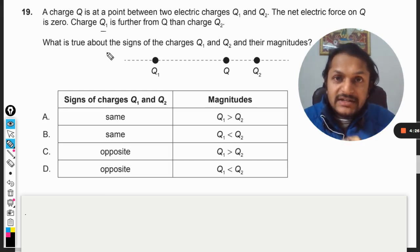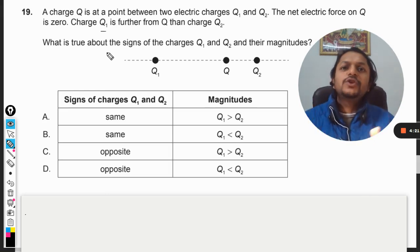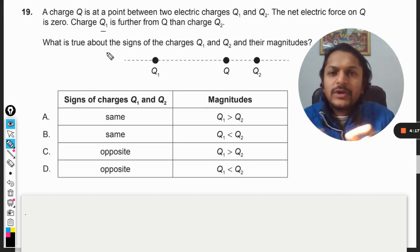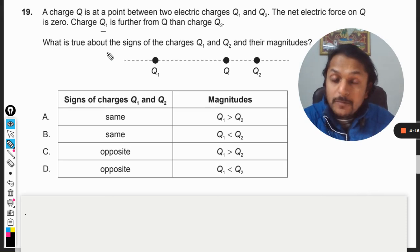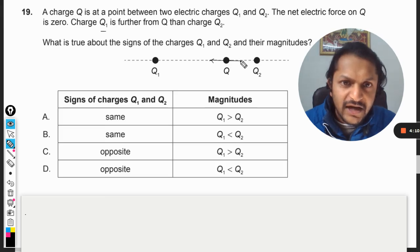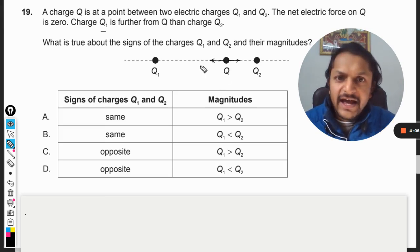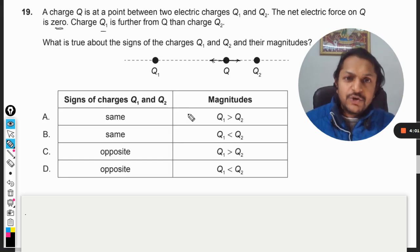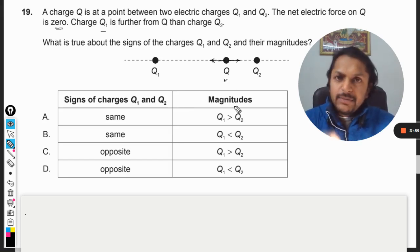There are three charges: q1, q2, and q. The q charge is placed between q1 and q2 in such a way that the distance from q1 is bigger than the distance from q2. It is given that the forces acting on it are equal and opposite to each other, so they cancel each other and the resultant force becomes zero. So this q charge placed between them is experiencing equilibrium.